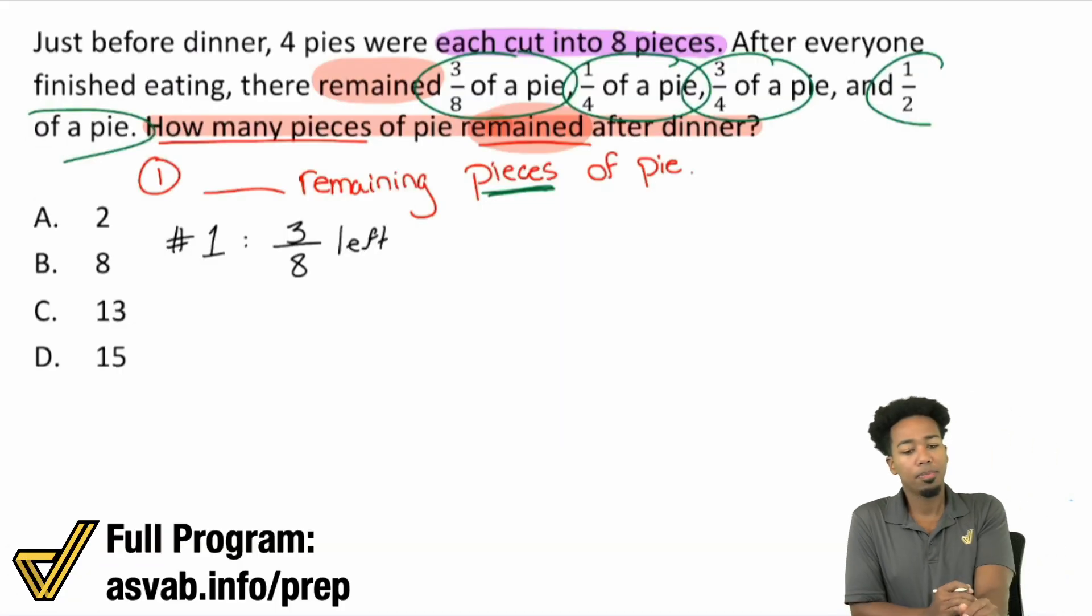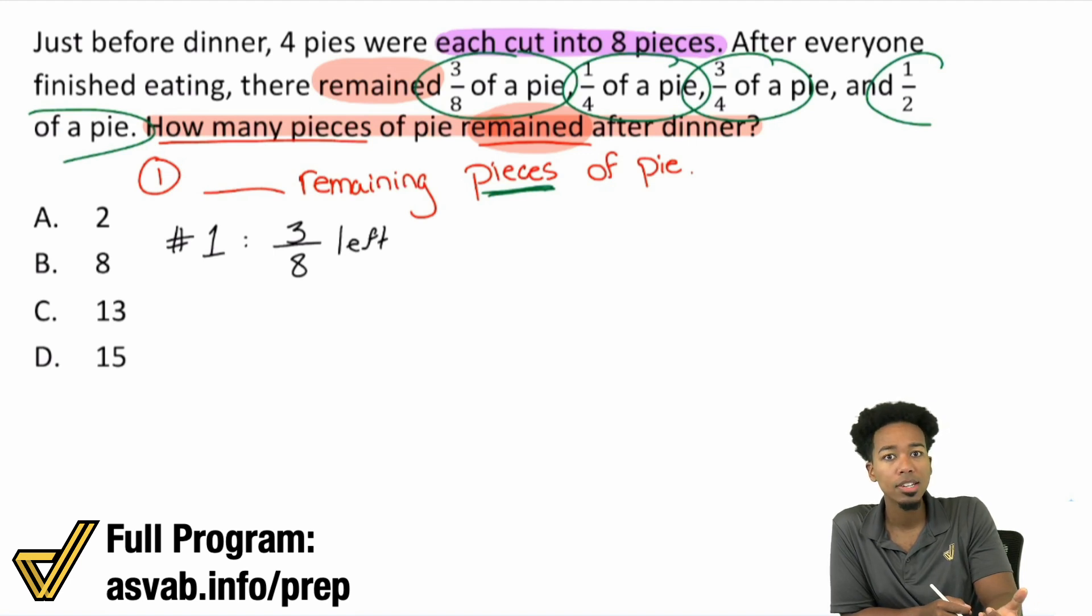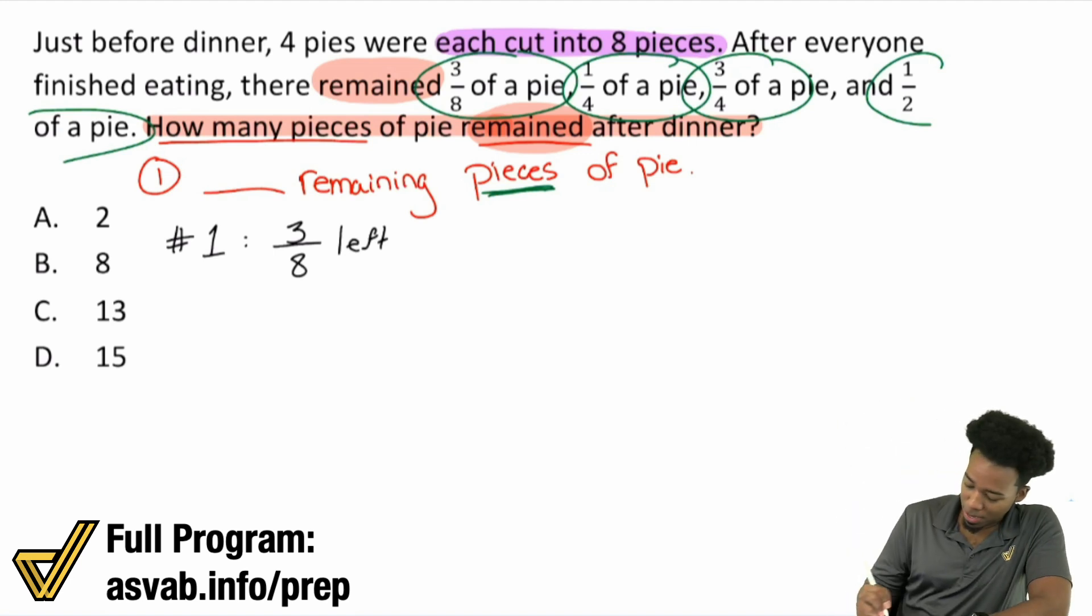Now think about it. What does a fraction mean? A fraction is a part of a whole, right? A fraction is a part of a whole. And so if we're taking a look at that, that means that we have 3 out of 8 left. So that's 3 pieces. Think about that. That's 3 pieces because it's 3 out of 8. That translates to 3 pieces.